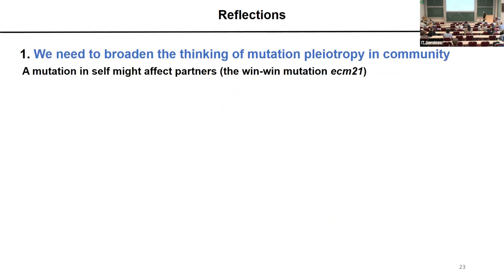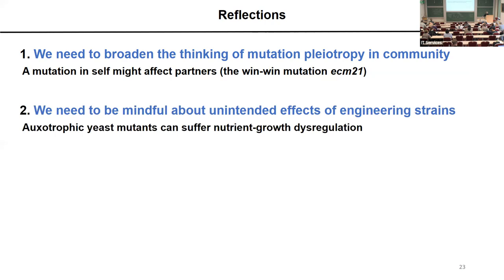I want to finish with some reflections. The bigger picture is that we need to broaden thinking about mutation pleiotropy in community: a mutation can affect multiple phenotypes of self, but it can also affect phenotypes of partners — ECM21 is an example. Second, we need to be mindful about unintended effects of engineering strains: auxotrophic yeast mutants suffer nutrient-growth dysregulation, which was not what we wanted in our model. But we have learned a lot from COSMO — how to define partner-serving, how to properly quantify monoculture phenotypes to understand community behavior, and how cooperation might evolve to fend off cheaters.